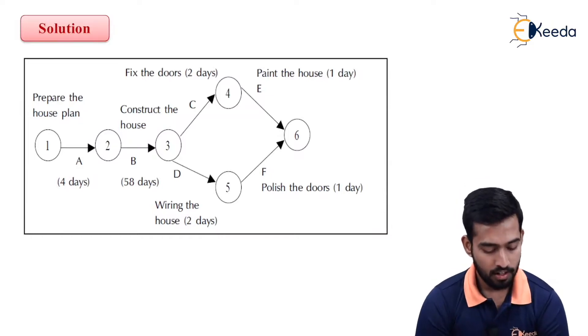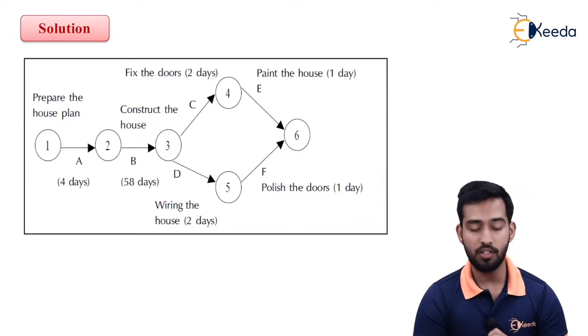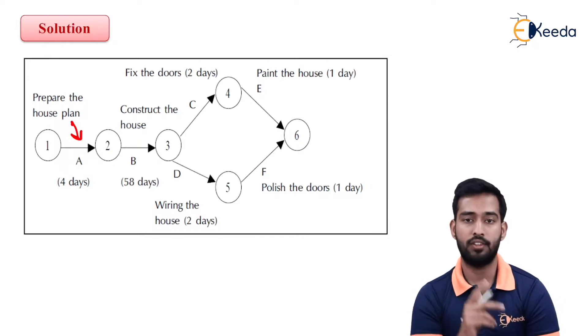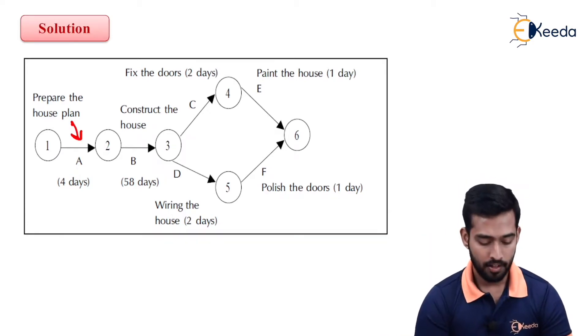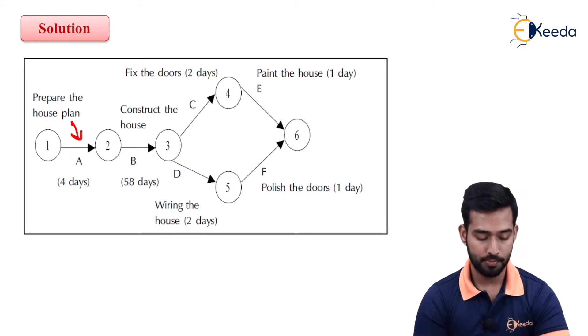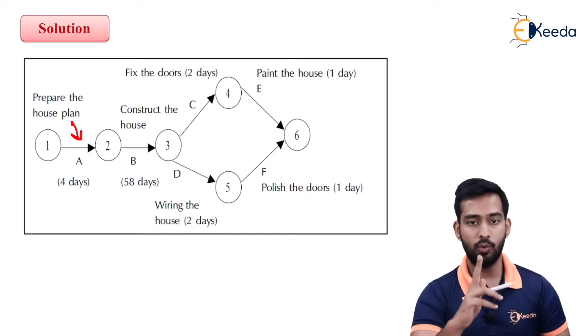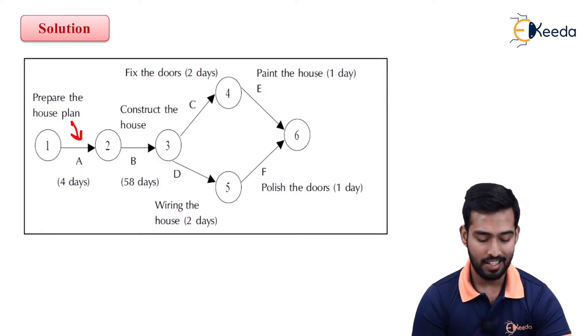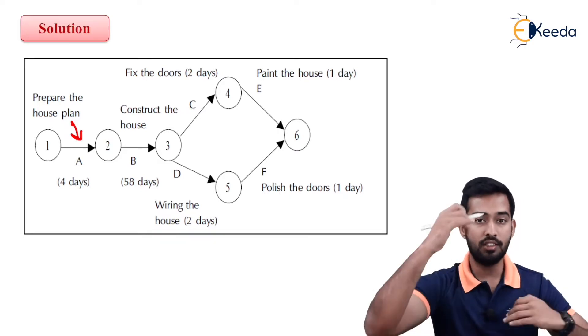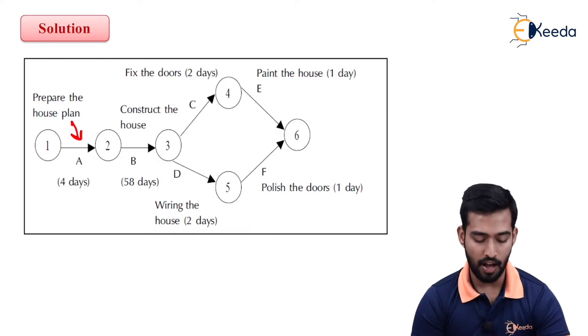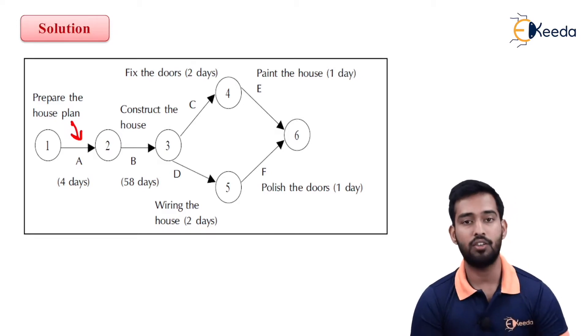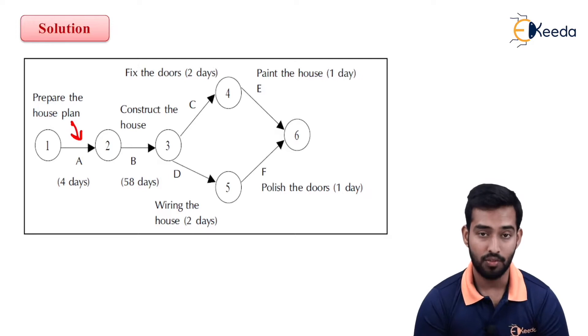The first event was preparation of your house plan, which is activity A, joining two events: starting event and end. So one-two is your A. Two-three is B, which is construction of the house. Then from three, we have two activities: three-four and three-five. Three-four is activity C, and three-five is activity D. Activity C is fix the doors, and activity D is wiring the house. So fixing the doors and wiring the house will go simultaneously. Then four-six is paint the house, and five-six is polish the door. After painting the house and polishing the door, your project will end. It will be ending on your sixth event. So this should be the last and the highest number event. It will represent the flow of your project.